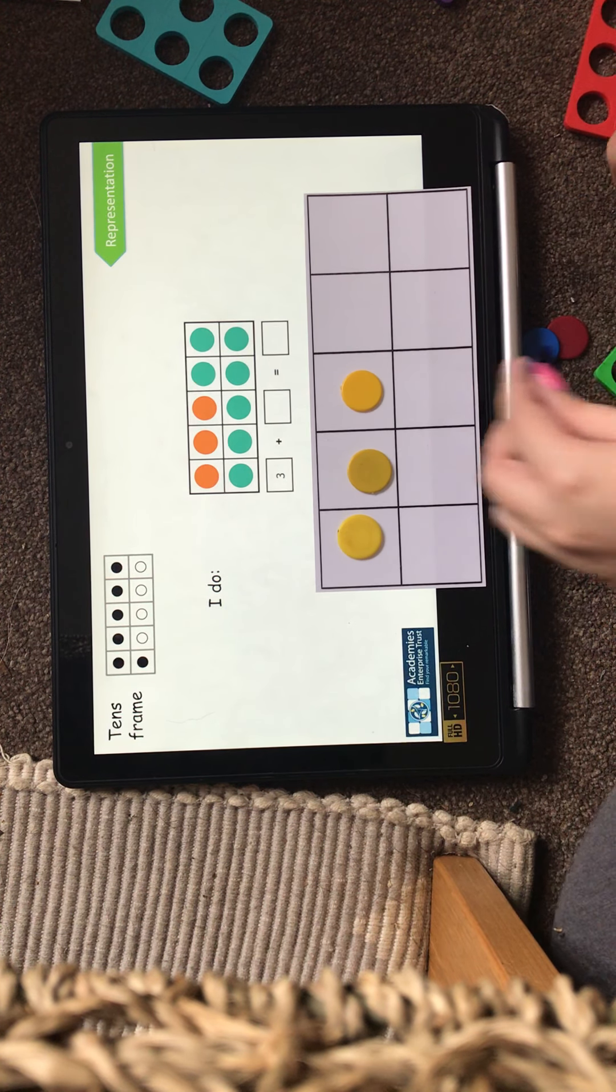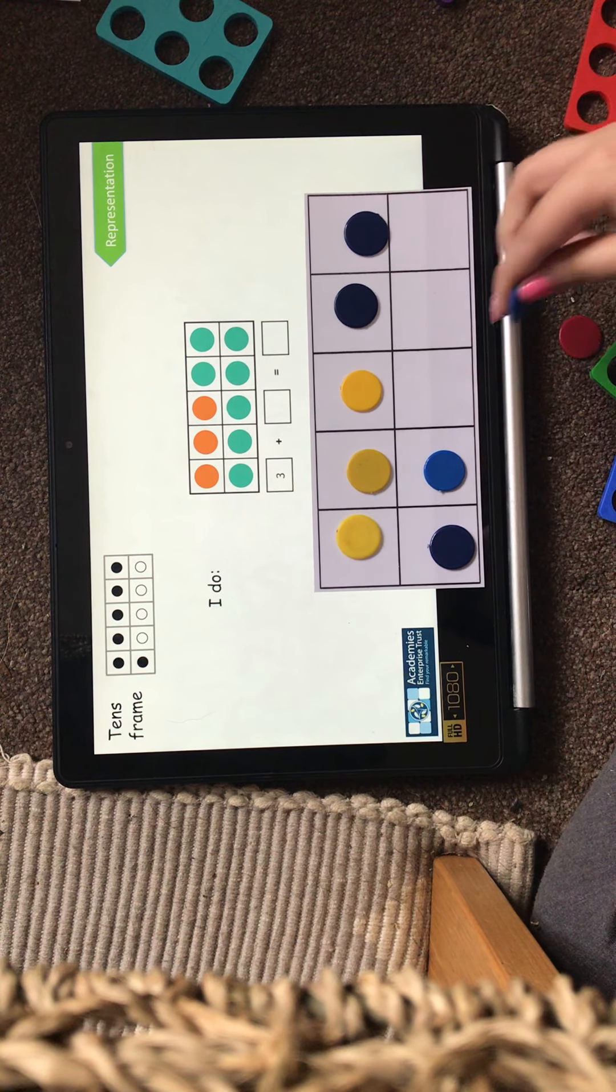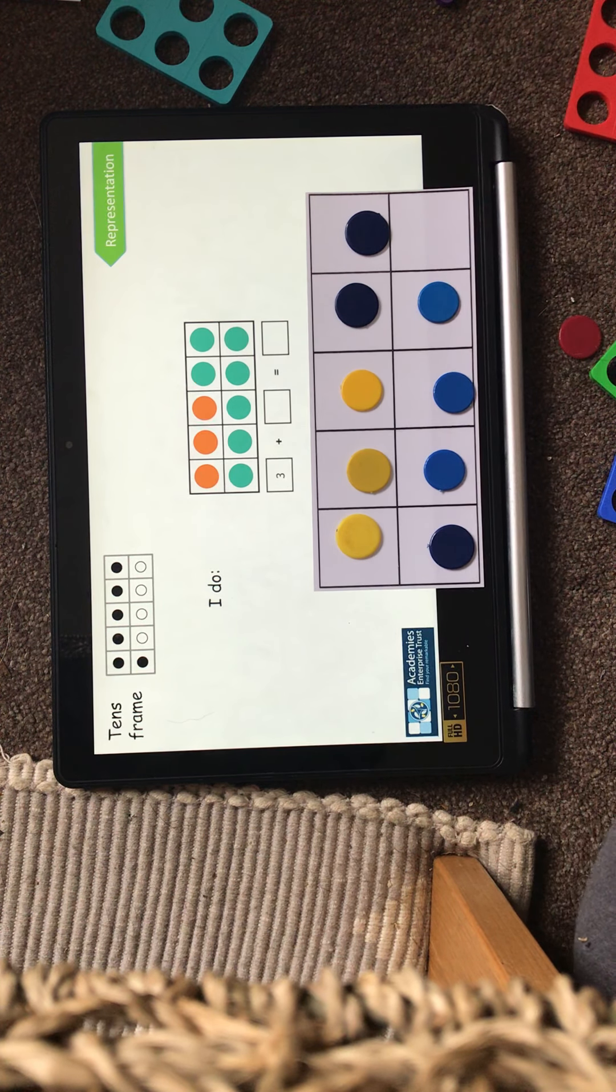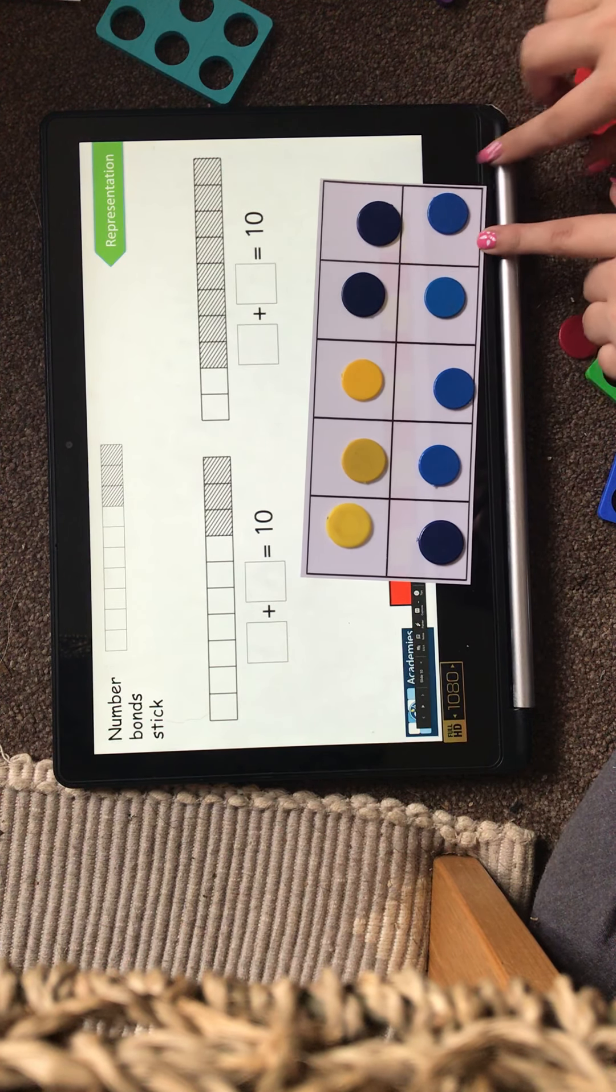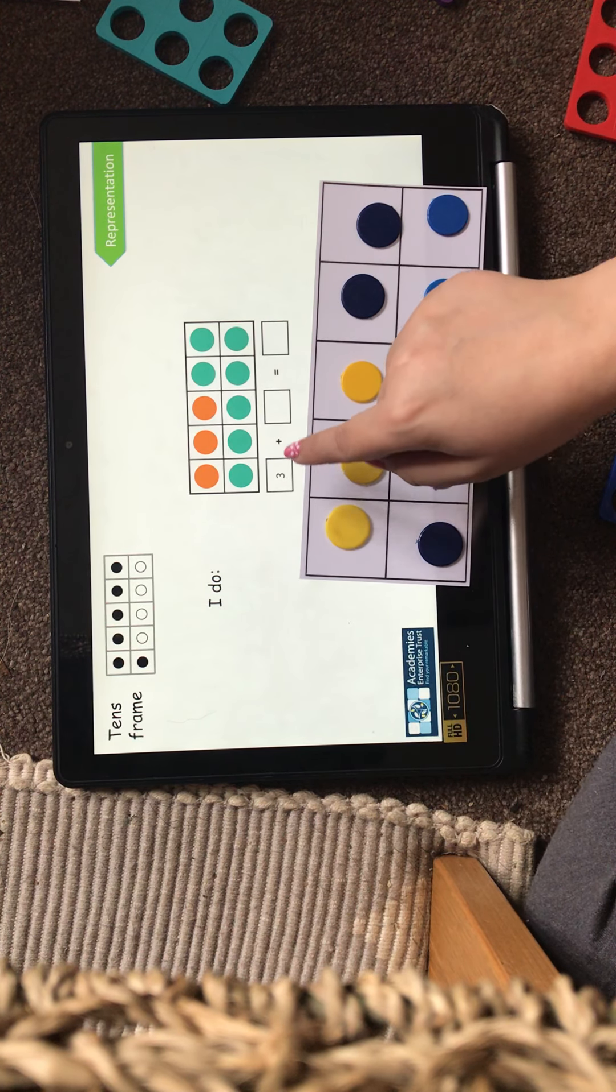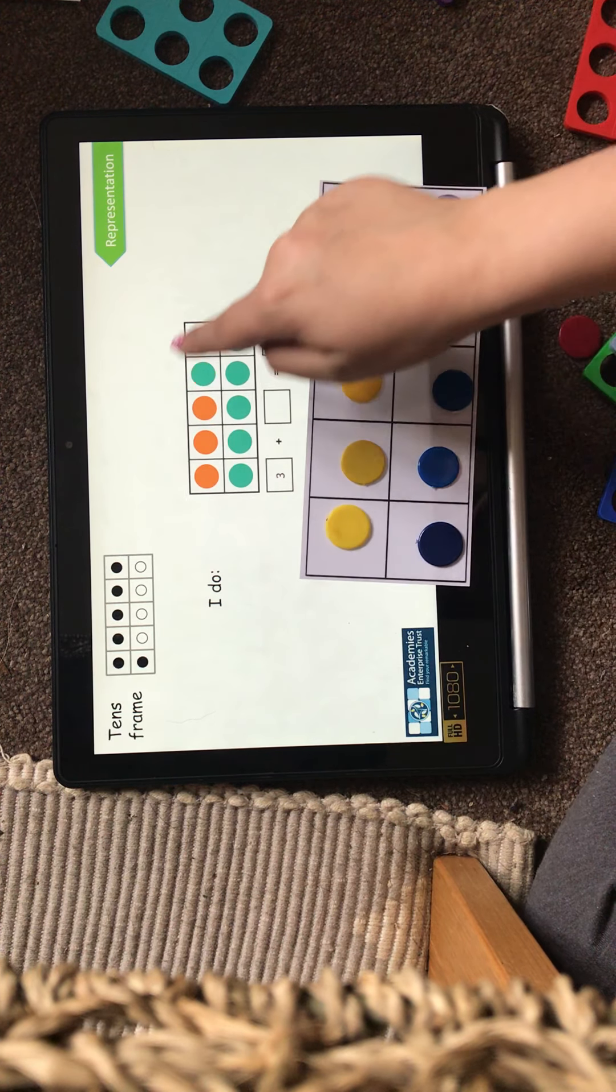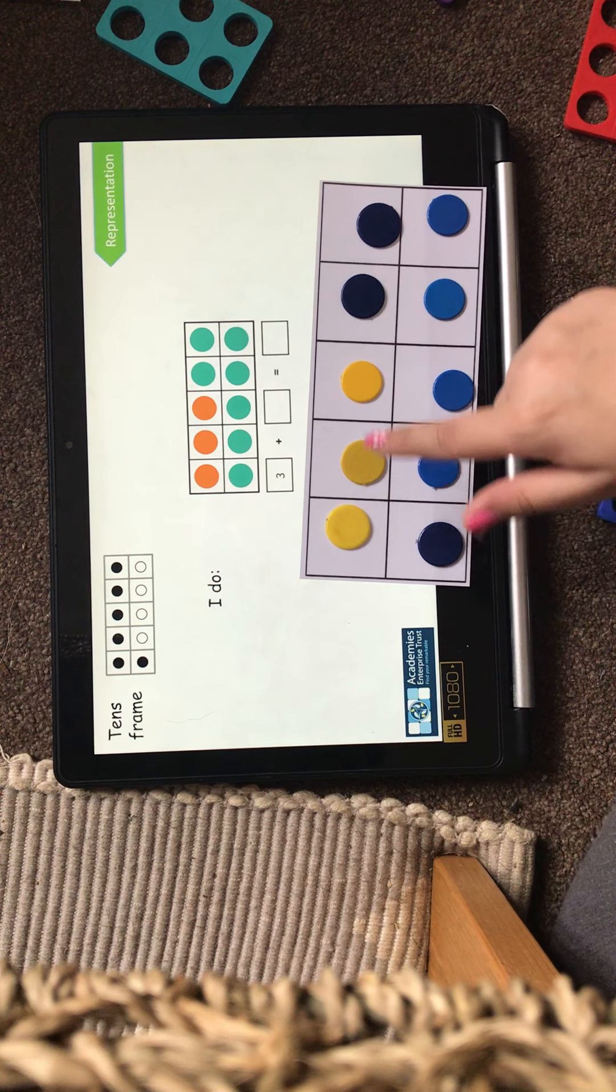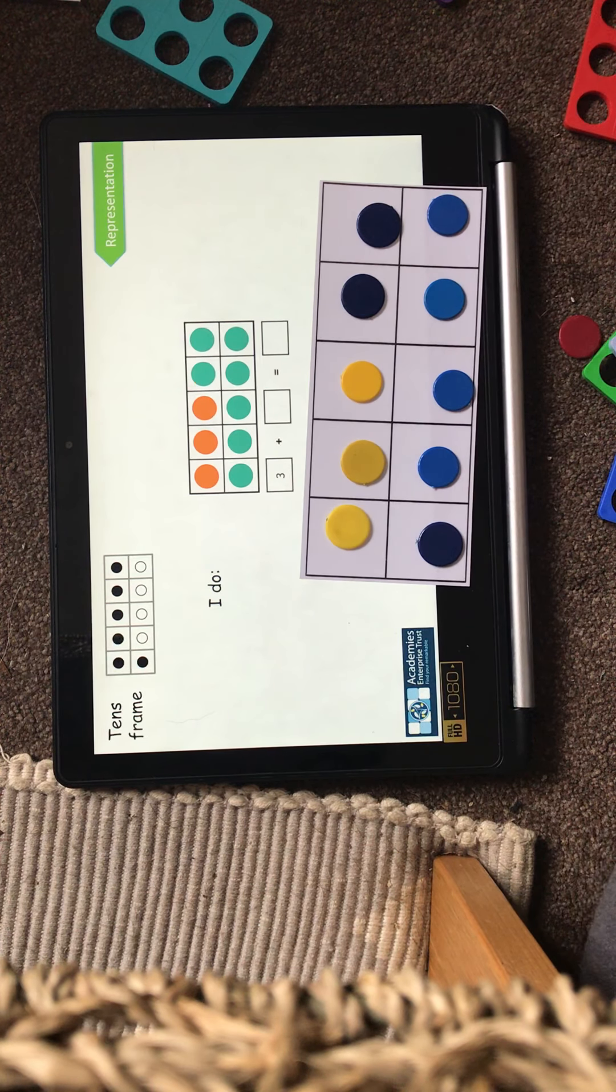So let's see how many blue ones I need. 1, 2, 3, 4, 5, 6, 7. Oh, I only need 7. So my calculation would be 3 add 7 equals 10, because 10 is the whole number that I want to get to. That's my total. 3 is the first part, so I know I need 3. But what else do I need to add to 3 to get to that 10?